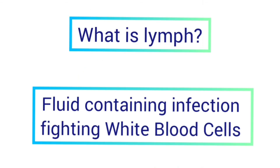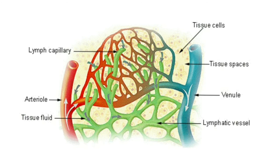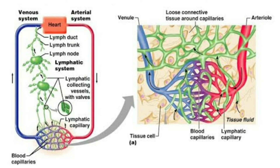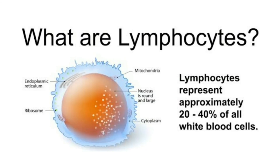What is lymph? Lymph is a fluid that contains infection-fighting white blood cells. When blood reaches the capillaries, some of the water and dissolved solutes are filtered out from the plasma into tissue spaces, forming a tissue fluid called lymph. Some of this lymph enters into tiny channels called lymph vessels. Lymph has all the elements of blood except RBCs and platelets. Therefore, it is slightly yellowish in color and contains a special type of white blood cells called lymphocytes, which help in fighting infections.